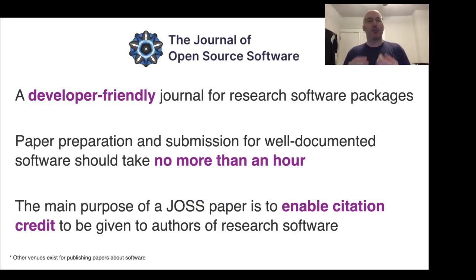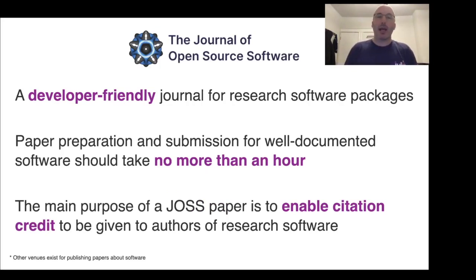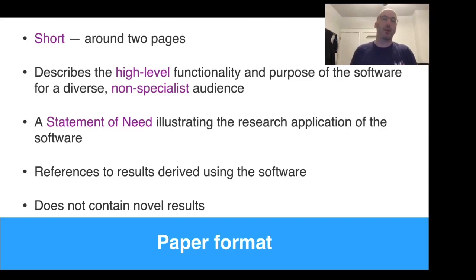JOSS is a developer-friendly journal for research software packages. Preparing and submitting your paper, provided it's well documented and tested, should take no more than an hour. The main purpose of a JOSS paper is to enable citation credit to be given to authors of research software. A paper should be short, around two pages.